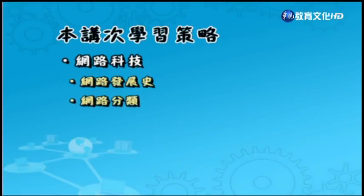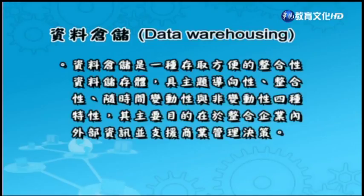首先我们来谈一下资料仓储，就是Data Warehousing。资料仓储是一种存取方便的整合性资料储存体，具有主题导向性、整合性、随时间变动性以及非变动性四种特性，其主要目的在于整合企业内外部资讯以资源商业管理决策。主题导向是指资料仓储可以将特定主题的资讯予以集中；整合性指存放在资料仓储的资料来自于不同的资料库；时间变动性是说明资料仓储以特定区间储存历史资料以供预测及趋势分析；非变动性指资料储存仓储之后就不会再变动了。